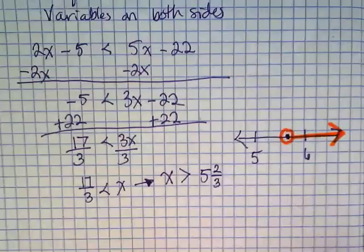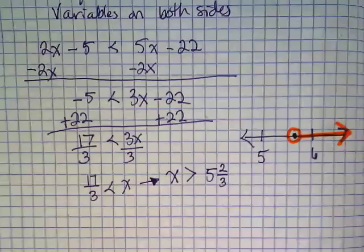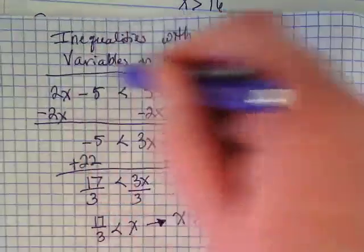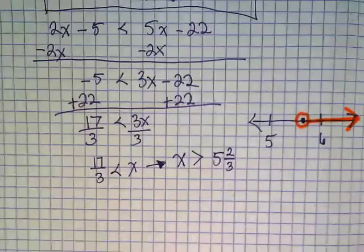And go to the right. Why did I leave it open? Because it's small. Because it's not equal to. It's just greater than. So that is an example of solving inequalities with variables on both sides.